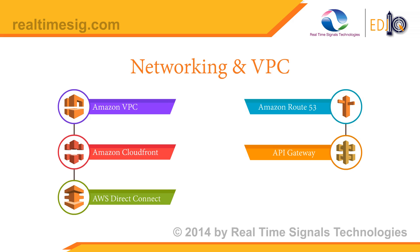Direct Connect is basically a dedicated line from either your corporate head office or data center directly into Amazon, connecting directly to your AWS environment.